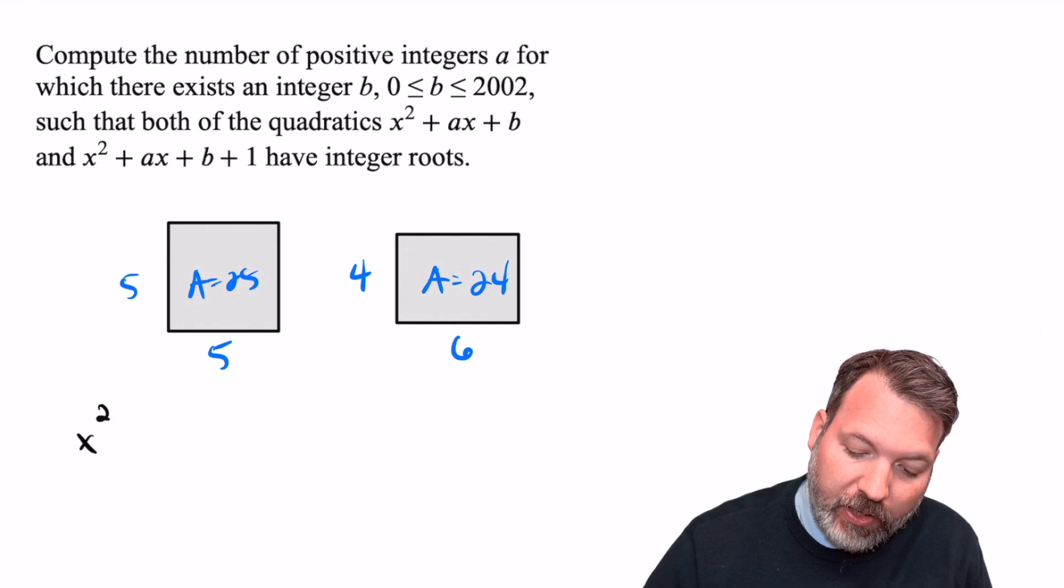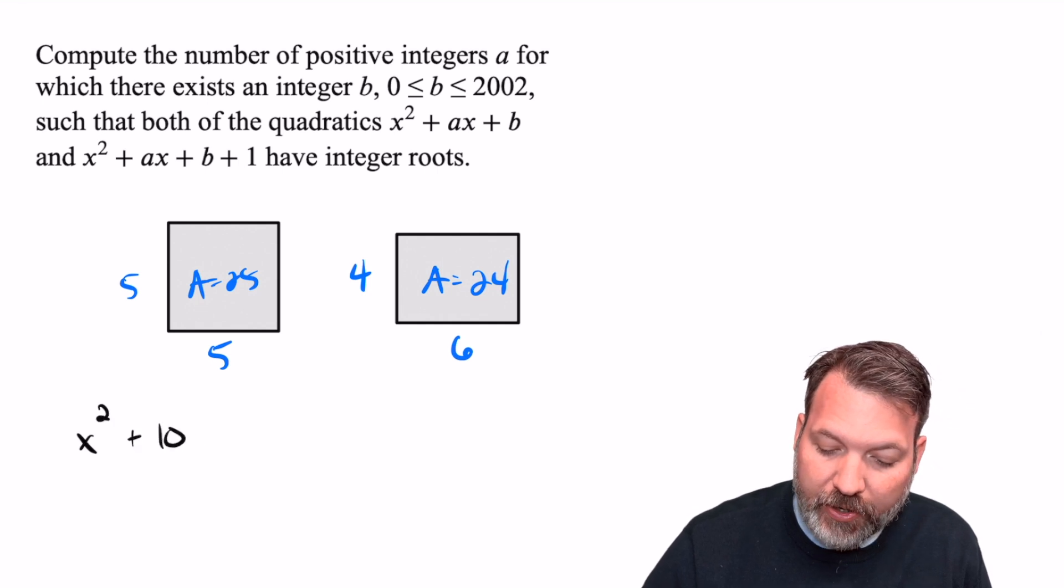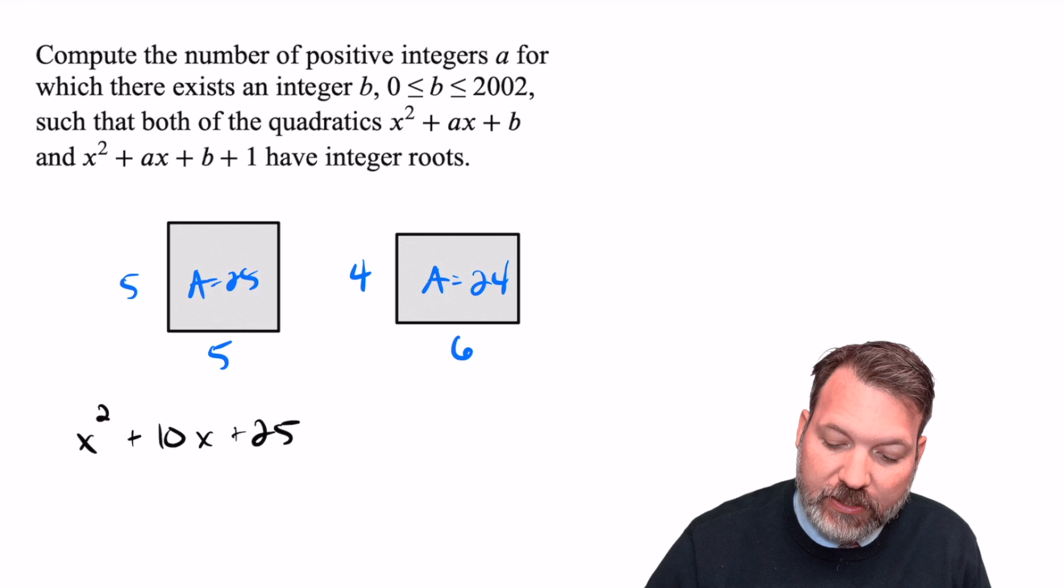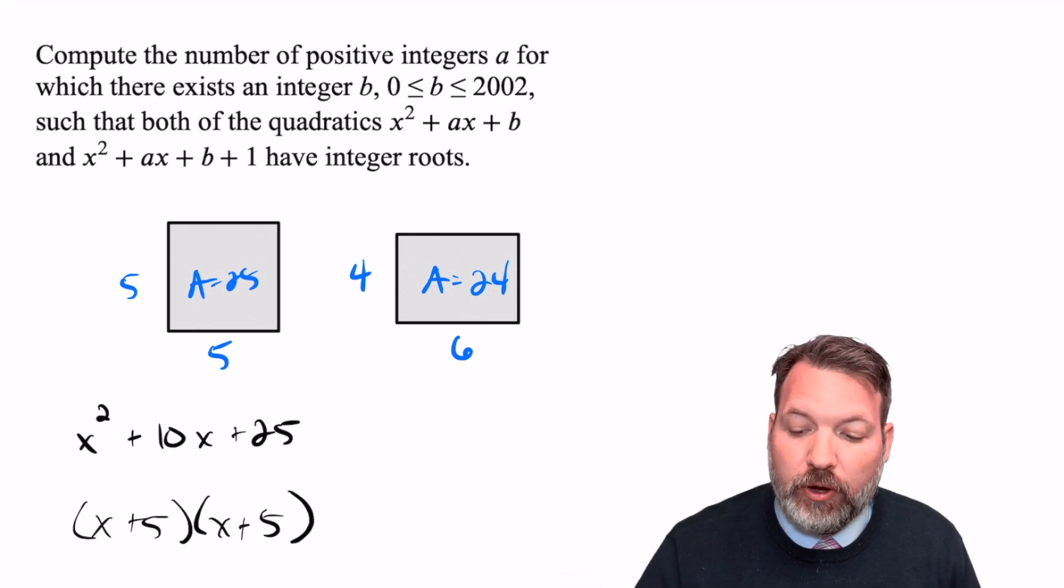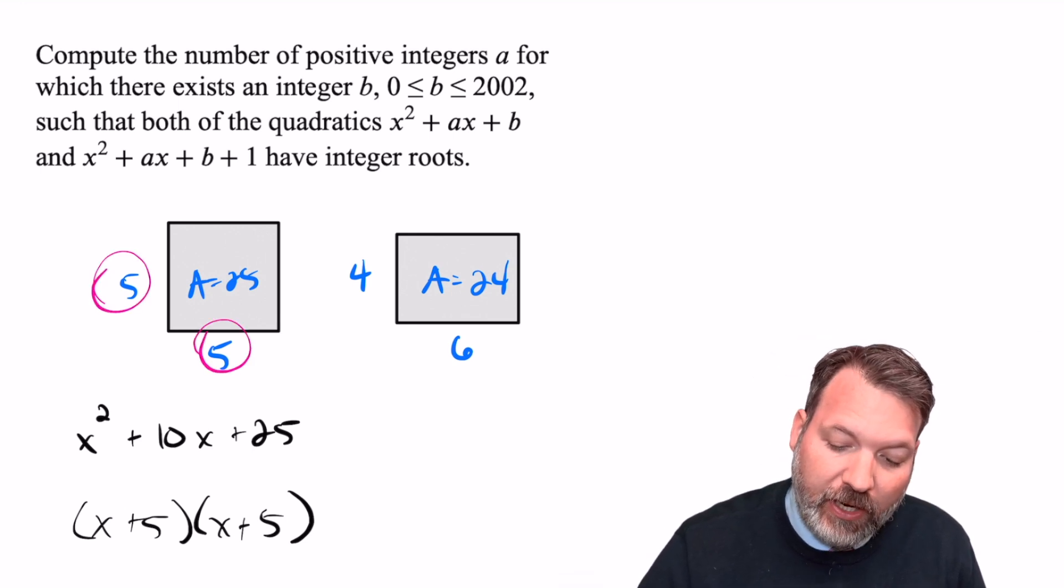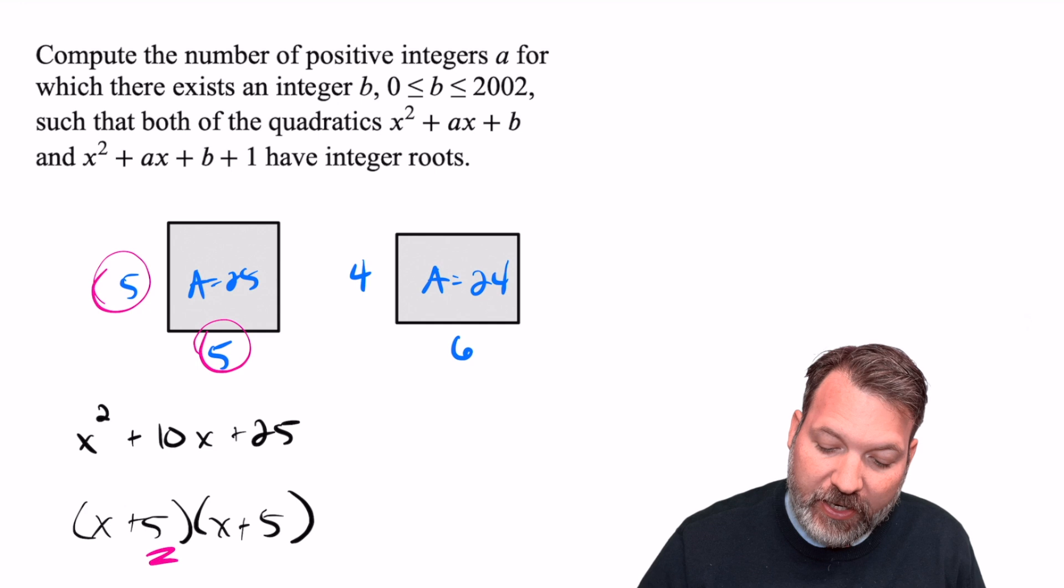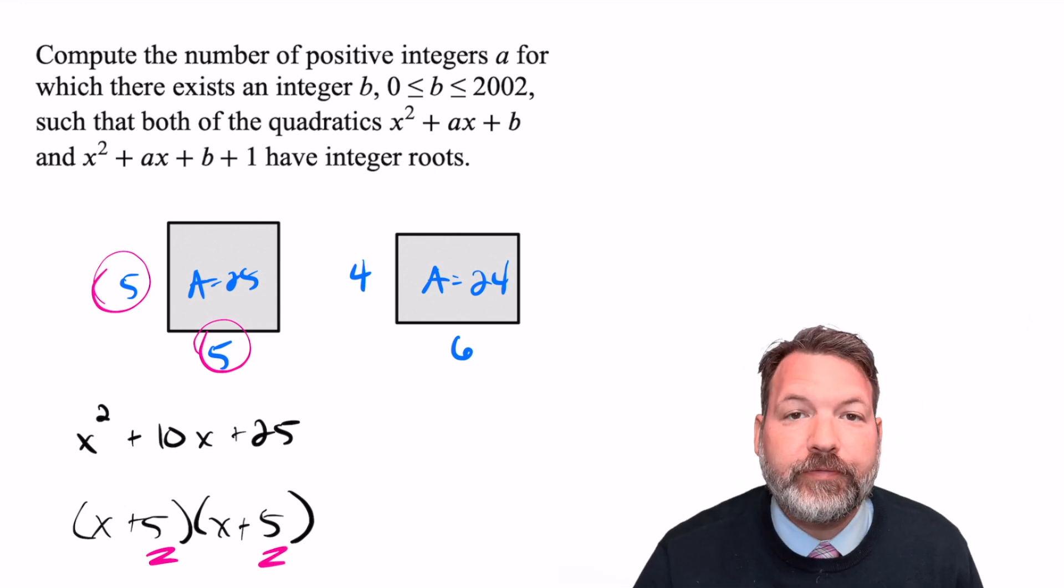This five by five rectangle we can represent as the perfect square trinomial x² + 10x + 25. And that's coming from an (x + 5) binomial times an (x + 5) binomial. So you can see basically we're taking the dimensions of the rectangle and using them as part of our binomial factors.